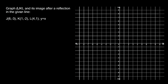Now let's run through a couple more examples. This problem says: graph triangle JKL and its image after a reflection in the given line. We're given points to plot and then need to reflect the triangle across y equals x. J is at (6, -3), K is at (1, -2), and L is at (4, 1). Y equals x is that straight 45-degree line through the origin, so let's draw that line.